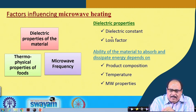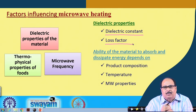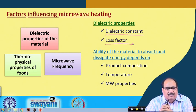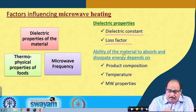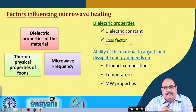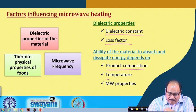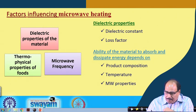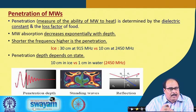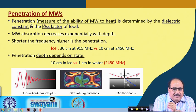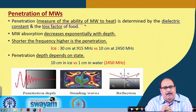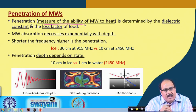Among the dielectric and thermophysical properties, the dielectric constant and loss factor are the important agents influencing the microwave heating process. The ability of the material to absorb and dissipate microwave energy depends upon the product composition, temperature, and microwave properties. The penetration of microwaves — a measure of the ability of the microwave to heat — is determined by the dielectric constant and loss factor of the food.